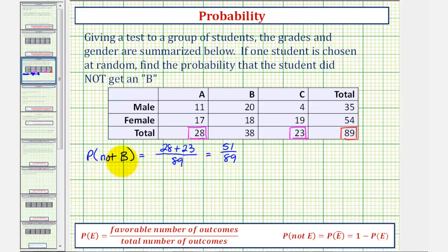Probability can be expressed as a fraction, decimal, or percentage. Let's leave this as a fraction for right now, but notice how if this did simplify, we should, but this does not simplify.